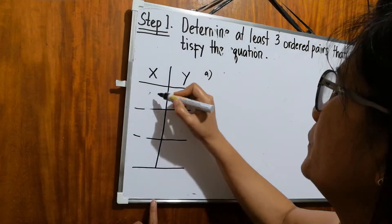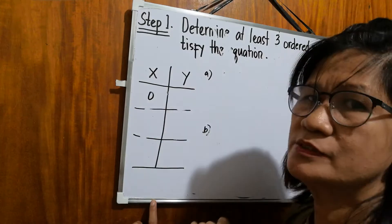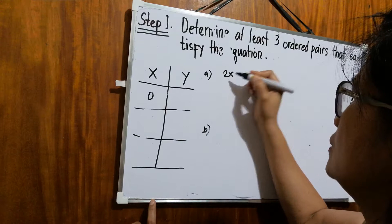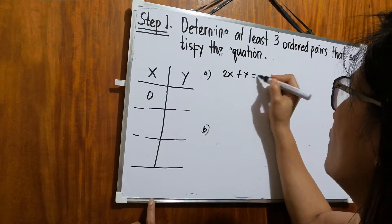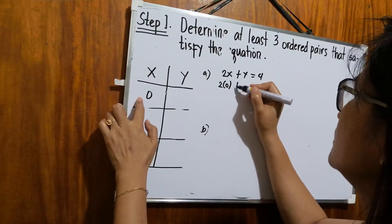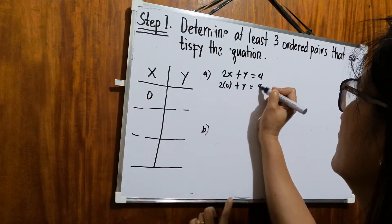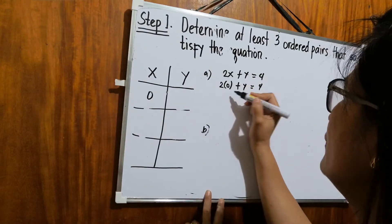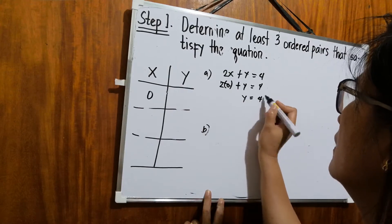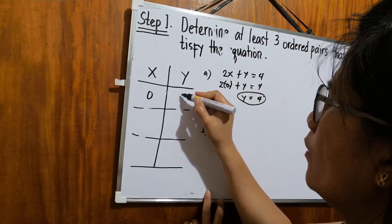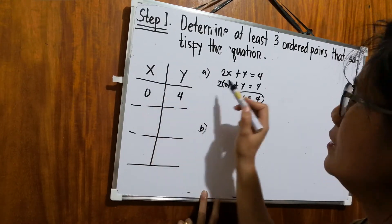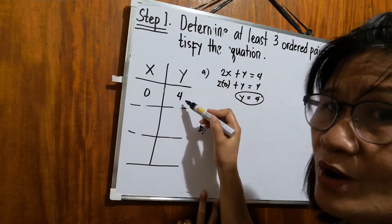Let's take the first one. If x is equal to 0, what is the value of y? So, solve the given equation 2x plus y equals 4. Then, 2 times 0, the value of x, plus y equals 4. If you multiply this, it will be 0. So y is equal to 4. Remember, if x is equal to 0 in this equation, the value of y is 4.